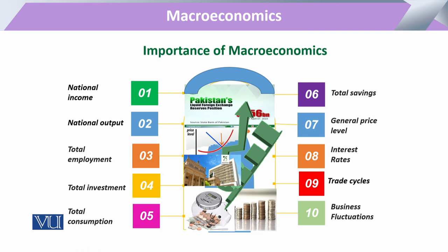It has 10 points, and there are many others: national income, national output, total employment, total investment, total consumption, total saving, interest rate, trade cycle, business fluctuation, and many more. The main essence is that the prefix 'national' or 'total' is added to these variables.